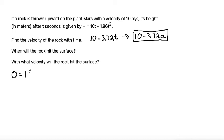So zero is equal to 10t minus 1.86t squared. To solve for t, the values of t where the rock is at the surface of Mars, let's first factor out a t since we have a t in every term. So that would be t times 10 minus 1.86t is equal to zero.